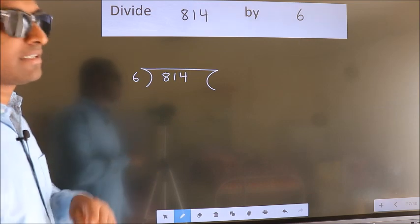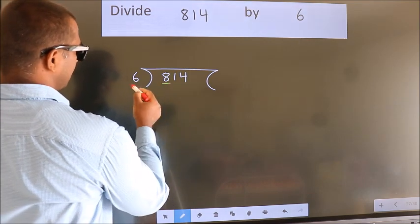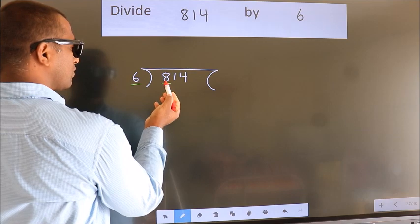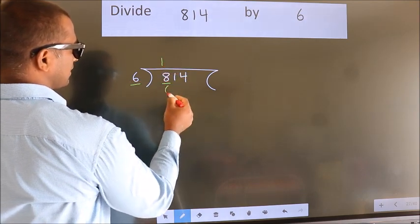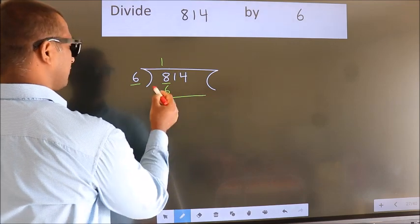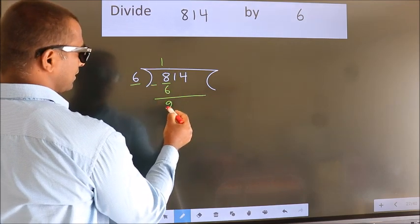Next, here we have 8, here 6. A number close to 8 in 6 table is 6 1s, 6. Now, we should subtract. We get 2.